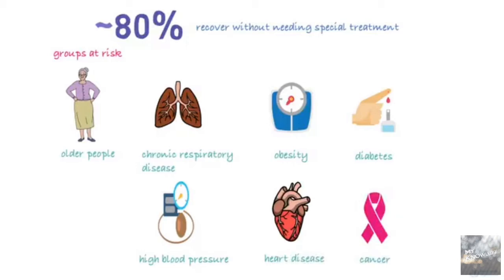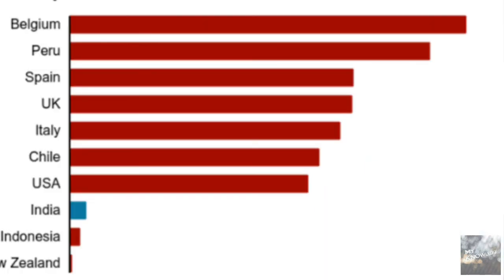About 80 percent of cases recover without needing any special treatment. The groups at risk are those below six years and above 60 years. Older people who have respiratory diseases, obesity, diabetes, high blood pressure, and cancer are more affected. There's nothing to be scared of, as the mortality rate is just 1.2 percent — meaning only about one to two people die out of 100.